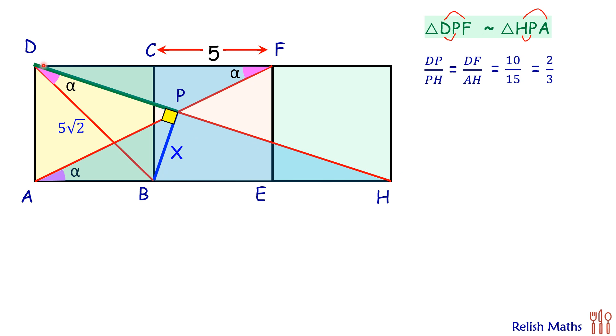This ratio of DP and PH is 2 by 3, or we can say DP is two-fifths of the full length DH. Now full length DH—DA is 5, AH is 15—so full length DH is nothing but 5√10. Now solving, we get 5 cancelled out, so DP, the length of DP, is 2√10 centimeters.